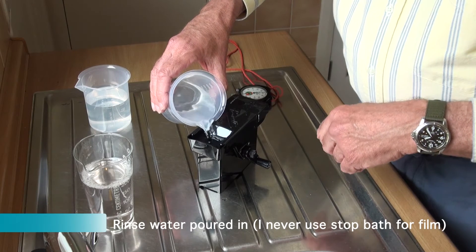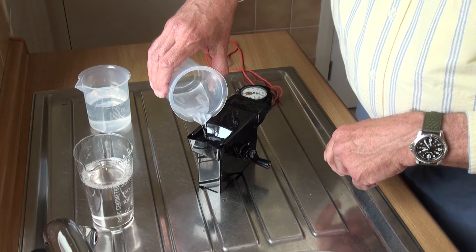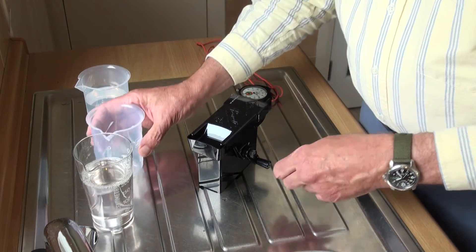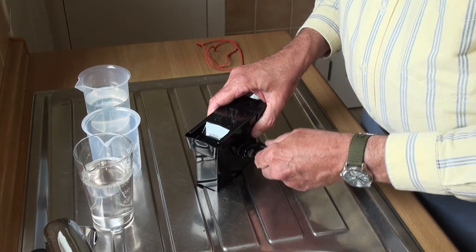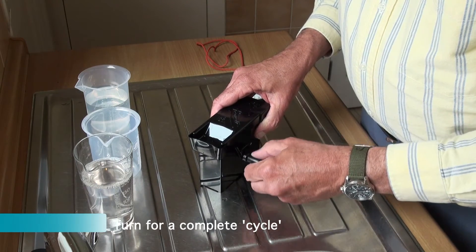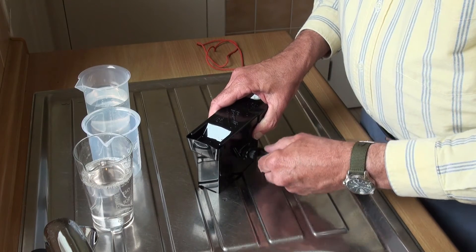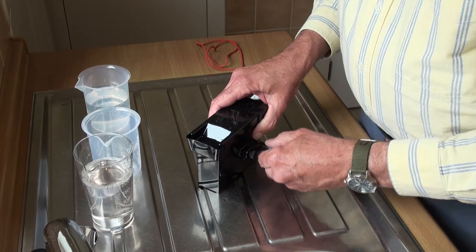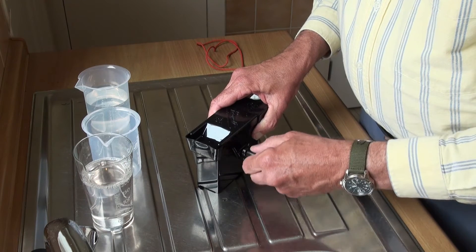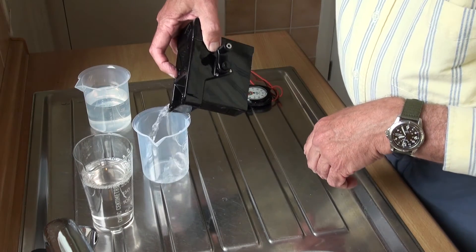Then the rinse water is poured in. And I turn the handle for one complete cycle. In other words so that all the emulsion gets to rinse. One complete cycle. Pour it away.